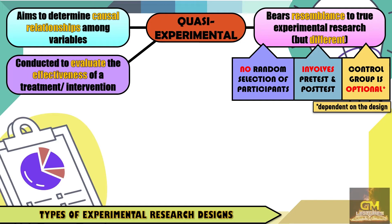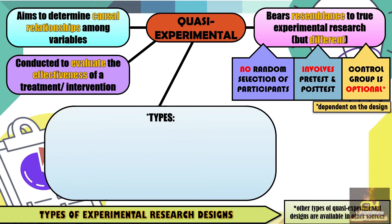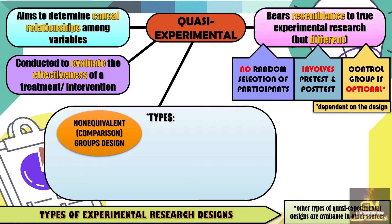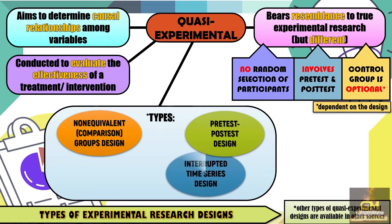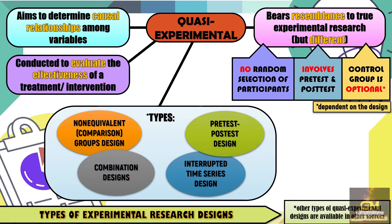Furthermore, quasi-experimental research is conducted to evaluate the effectiveness of a treatment or intervention. With regard to types, there are four: first would be the non-equivalent comparison groups design, the pre-test post-test design, interrupted time series design, and combination designs.